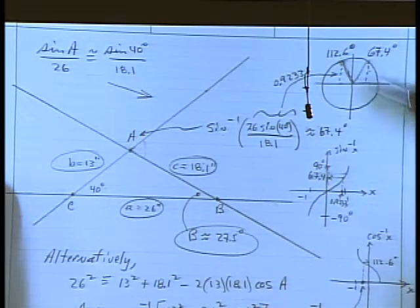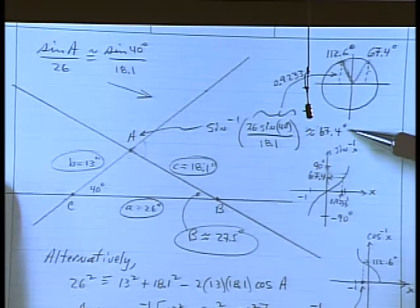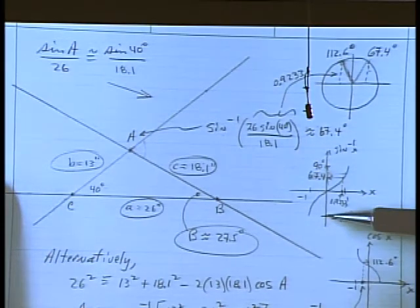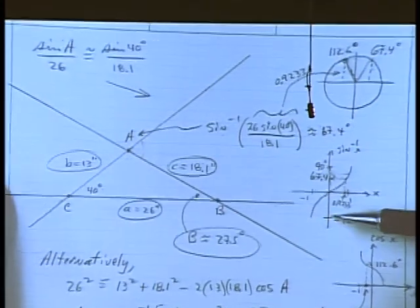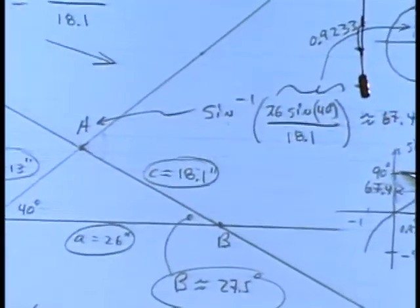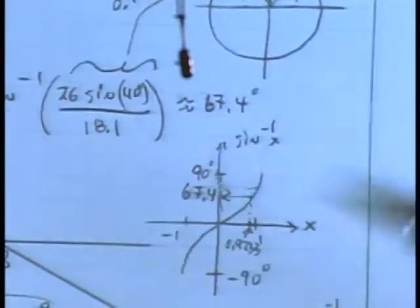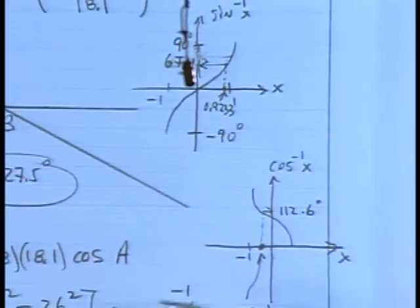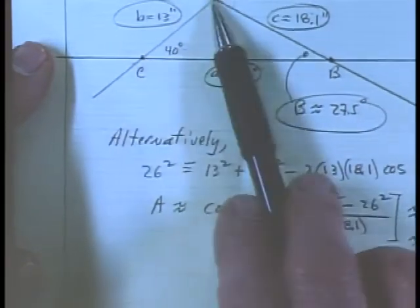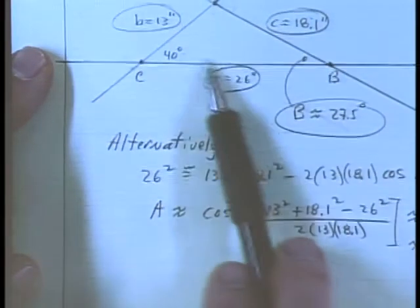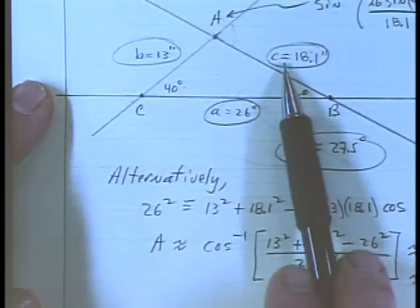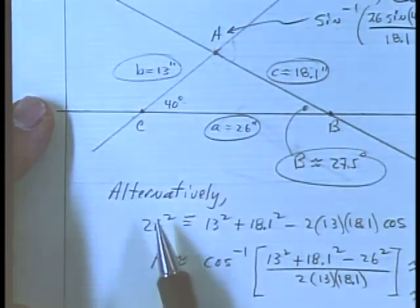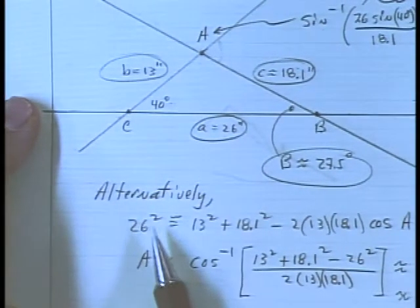Good question: why does the law of cosines give the correct answer? The law of sines only lets you use angles between minus 90 and 90 degrees for output values. But if we then used the law of cosines — with all three sides known after finding 18.1 — it uses: 26 squared equals the sum of squares of the other two legs minus twice their product times cosine of the unknown angle, then solving with an inverse cosine function.